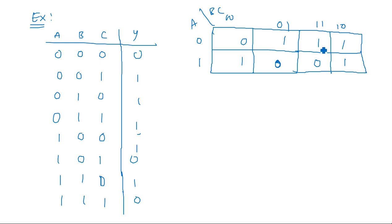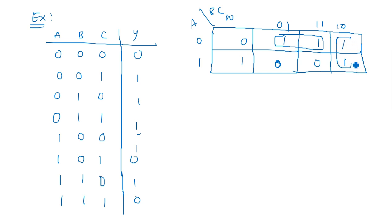Now how to map this K-map. Mapping rules are very important: you cannot map three 1s or five 1s together. You must always map in powers of two — two 1s, four 1s, six 1s, eight 1s. So you can map two cells here and again two cells there.